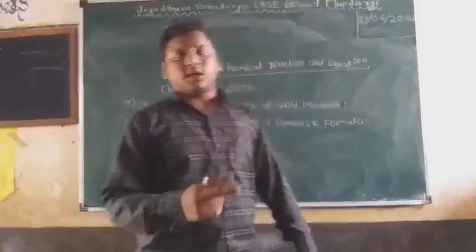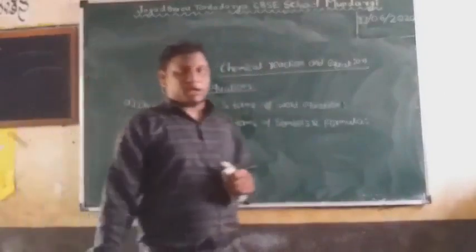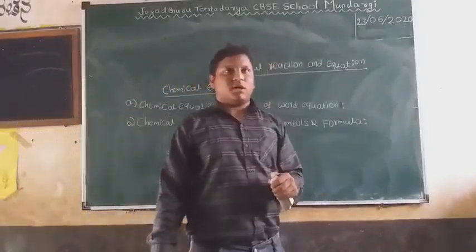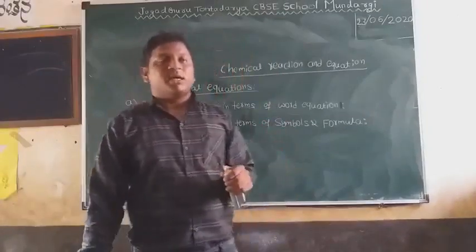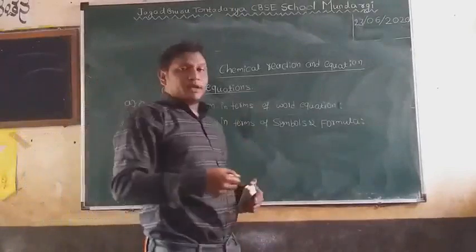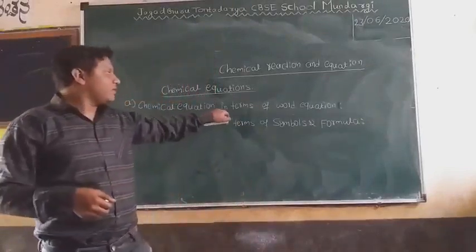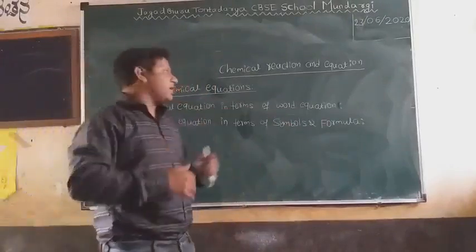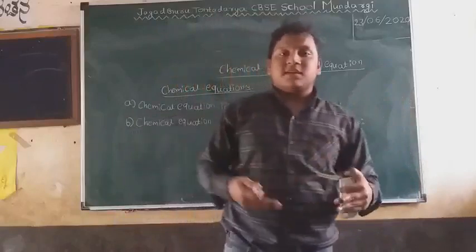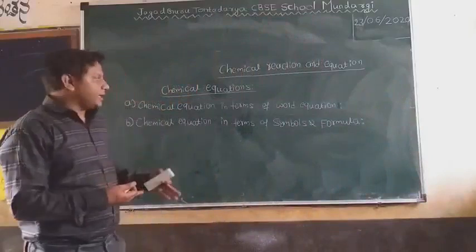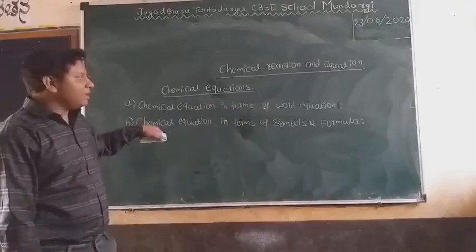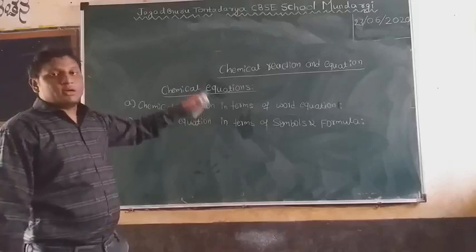A chemical equation can be written in two forms. One is a chemical equation in terms of a word equation, and another one is a chemical equation in terms of symbols and formulas. Both represent the same reaction, but the representation is in a different way. Using words, I can write the reaction, but in symbol and formula form, we convert those words into formulas.